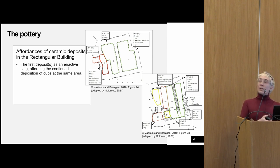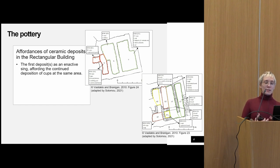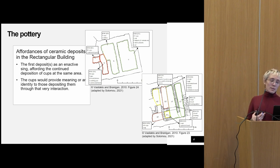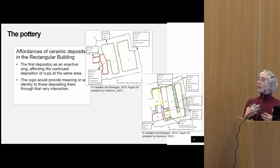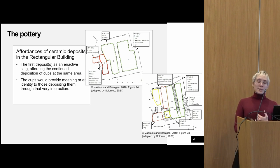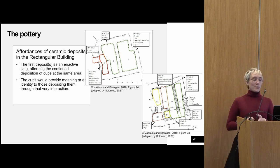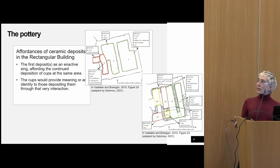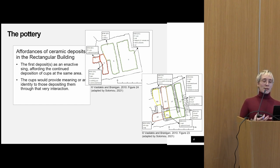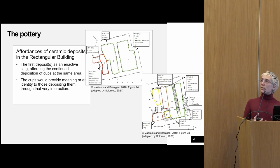The first deposits can be seen as affording and enforcing the continual deposition in the same location. The strength, dynamism, and therefore the efficacy of this sign would have grown in association with the size of the deposit, until it would have eventually been consolidated into custom or tradition. It's easy to think about the way humans ascribe meaning to the ceramic, but I want to think about the way the cups would have provided meaning to the person depositing them — connecting those contributing to the deposit now with those who contributed in the past and those who would contribute in the future, with humans and things tied together in dependencies and entangled in culturally and temporally situated abstractions.